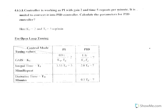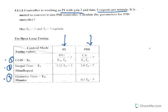Here is another example, 4.6. A controller is working as a PI (proportional-integral) controller with a gain of 2 and time of 5 minutes per repeat. It is needed to convert it into a PID controller. Calculate the parameters for the PID controller. In this case, the current controller is a PI controller and we want to find the new gain, integral time TI, and derivative time TD.